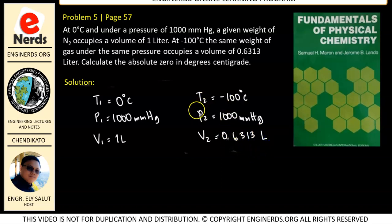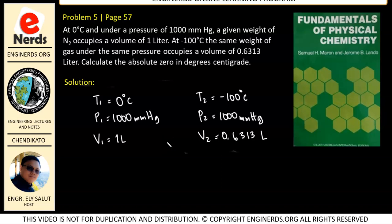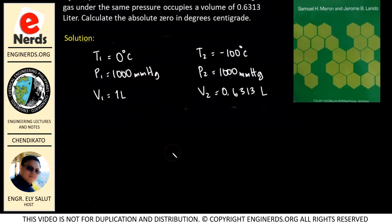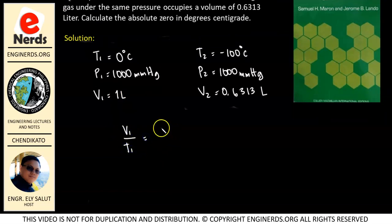As you can see, the condition in this problem is that we have a fixed amount of gas and constant pressure. So this is an ideal gas problem with constant pressure, which means we will be using Charles' Law: V1 over T1 is equal to V2 over T2.